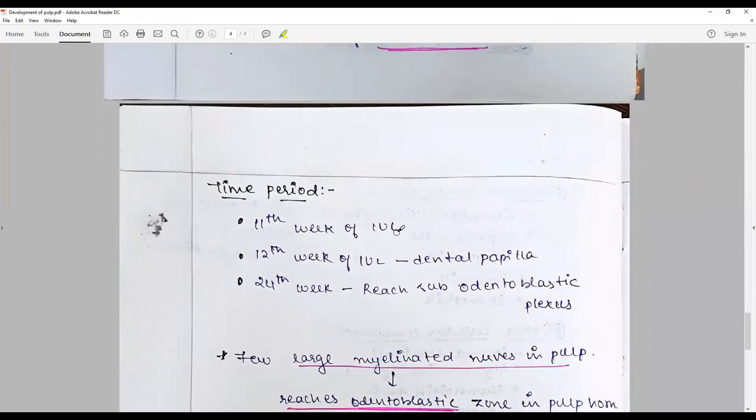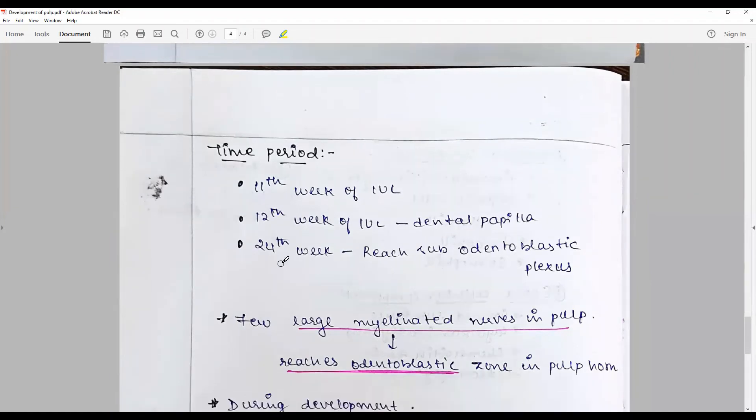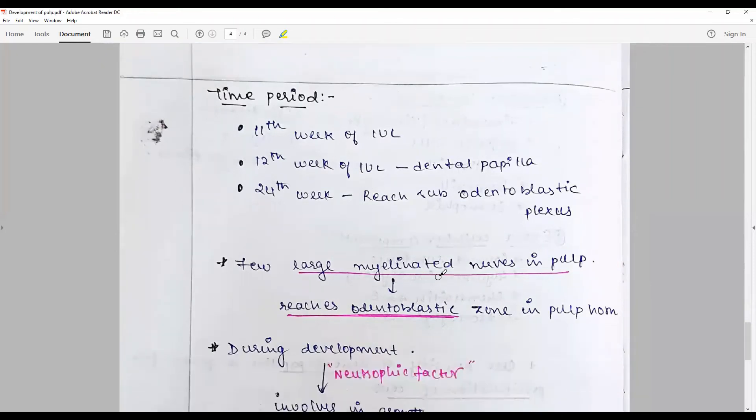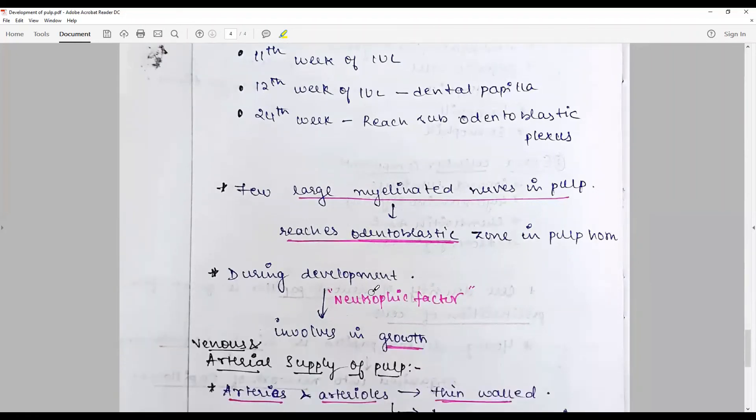At the 11th week of intrauterine life, the whole process starts. At the 12th week, the dental papilla organizes. At the 24th week, it reaches to the sub-odontoblastic regions, and a few large myelinated nerves in pulp reach odontoblastic zones along the pulpal horn during development.